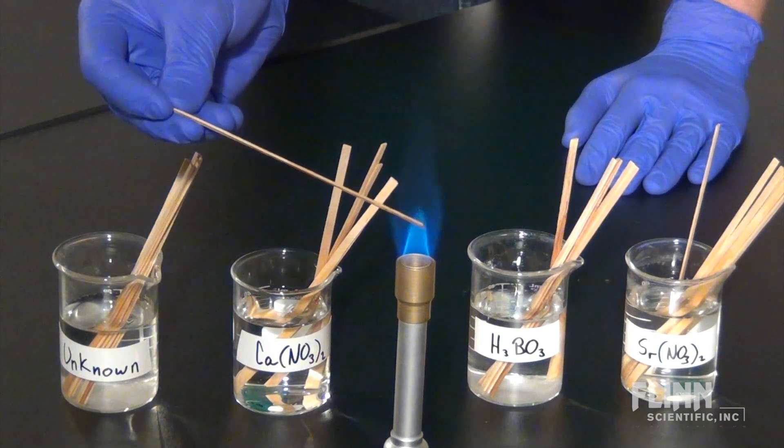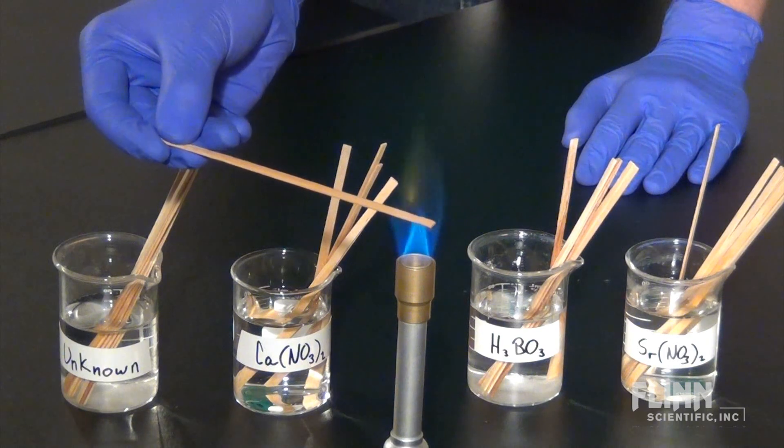After determining the colors of the known compounds, students can then determine the identity of the unknown compound.